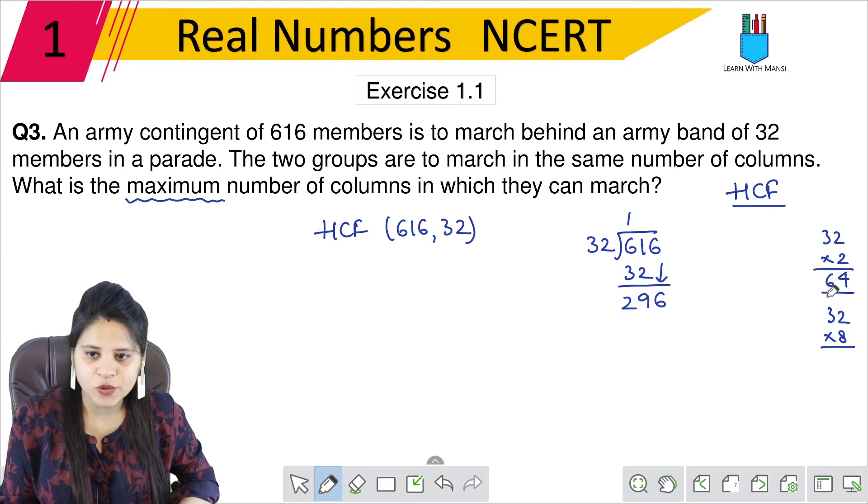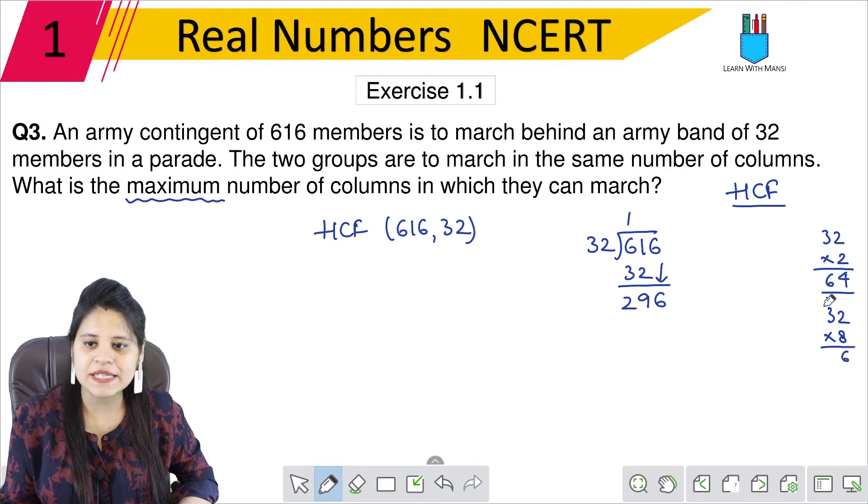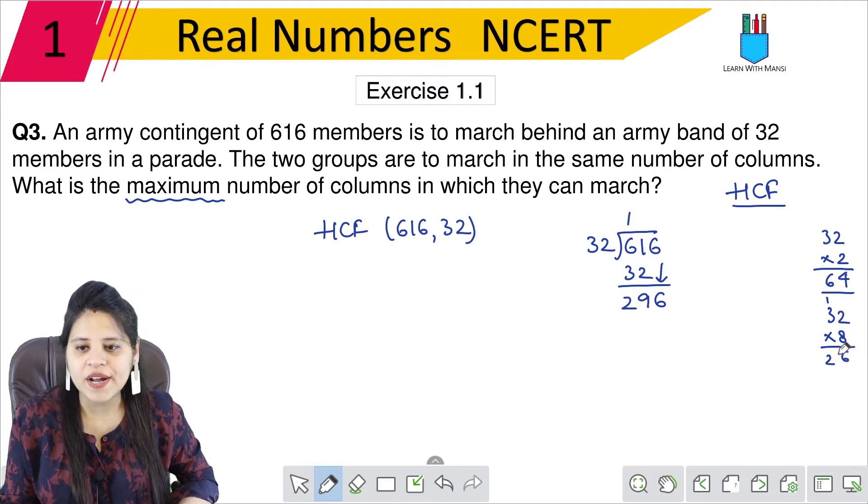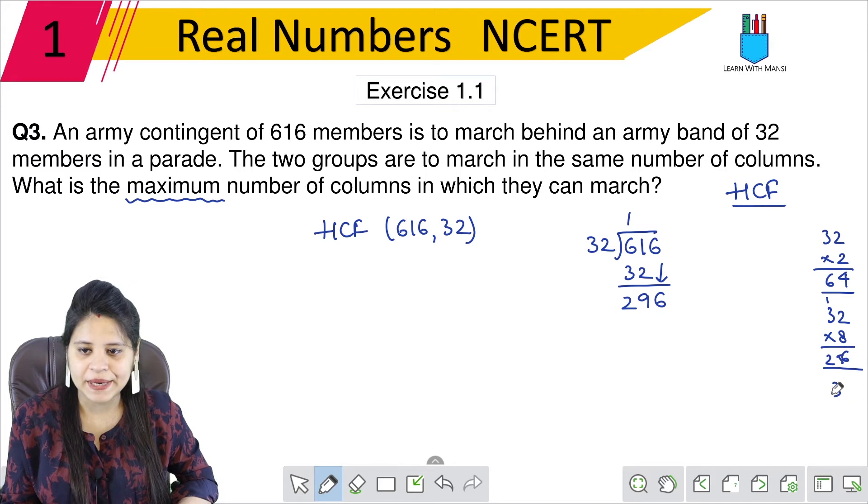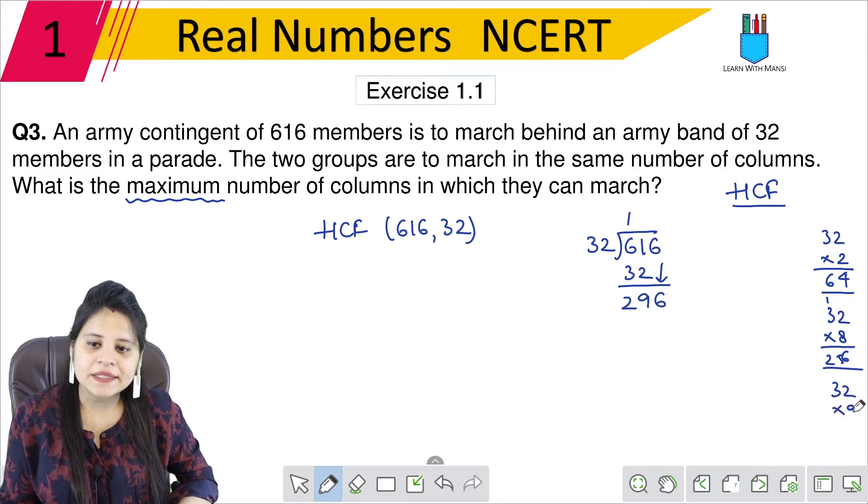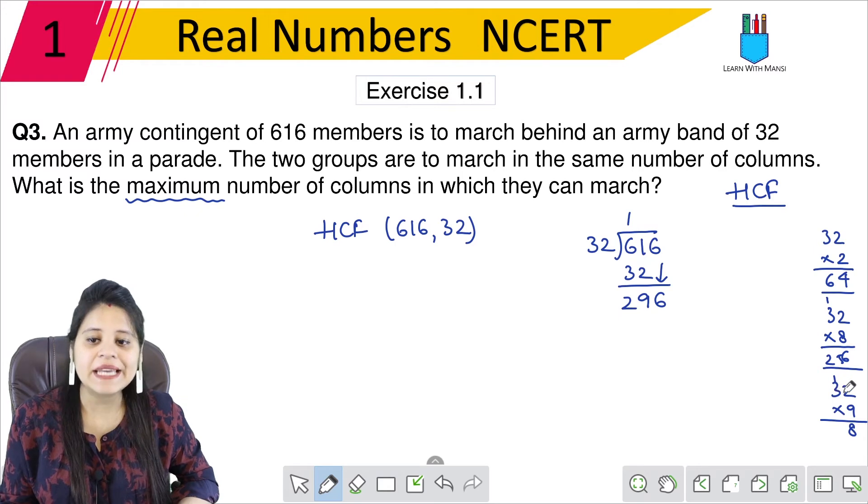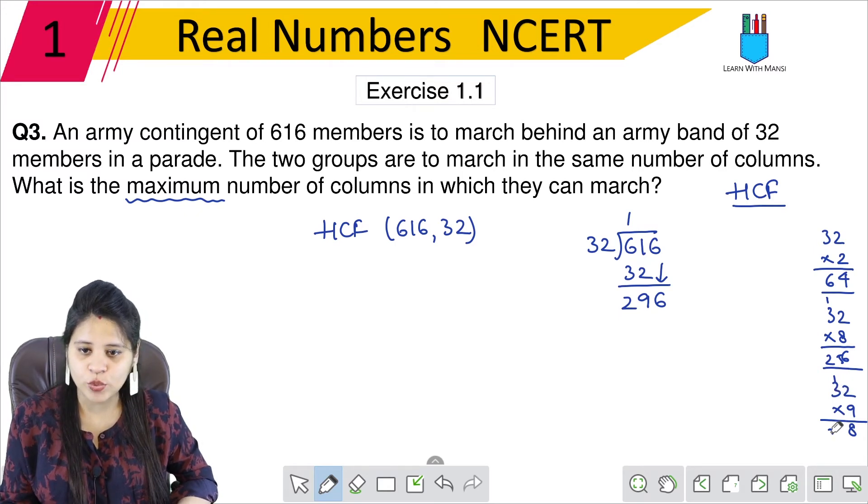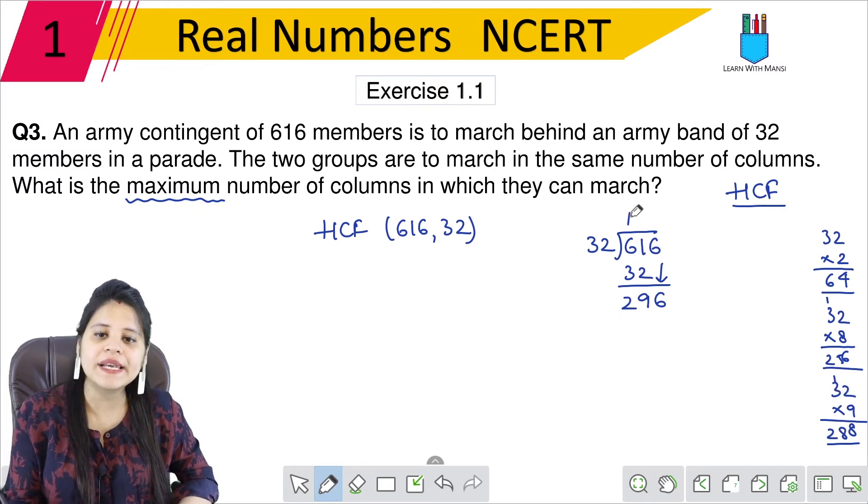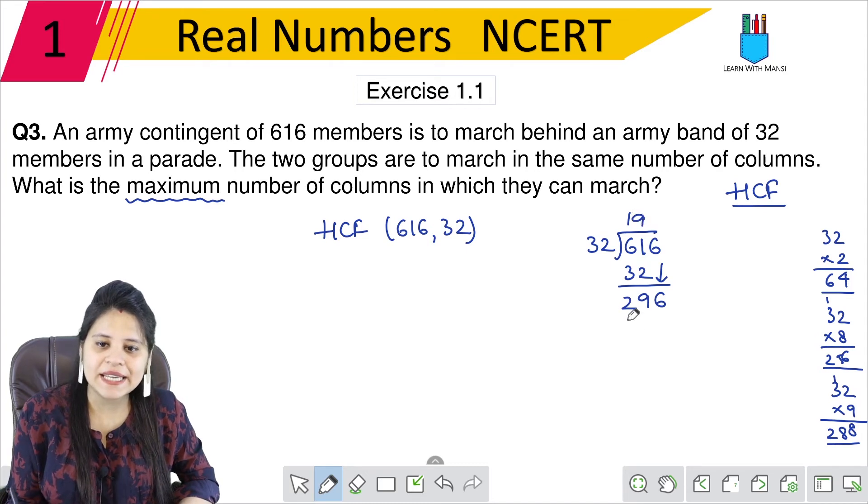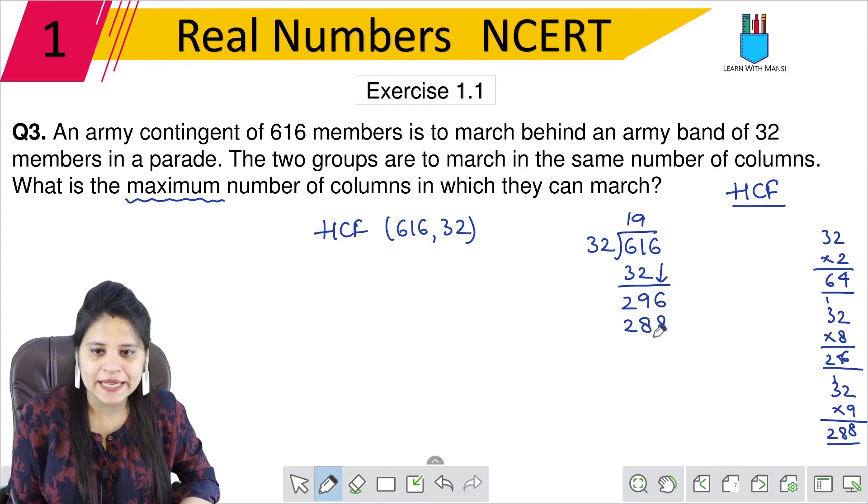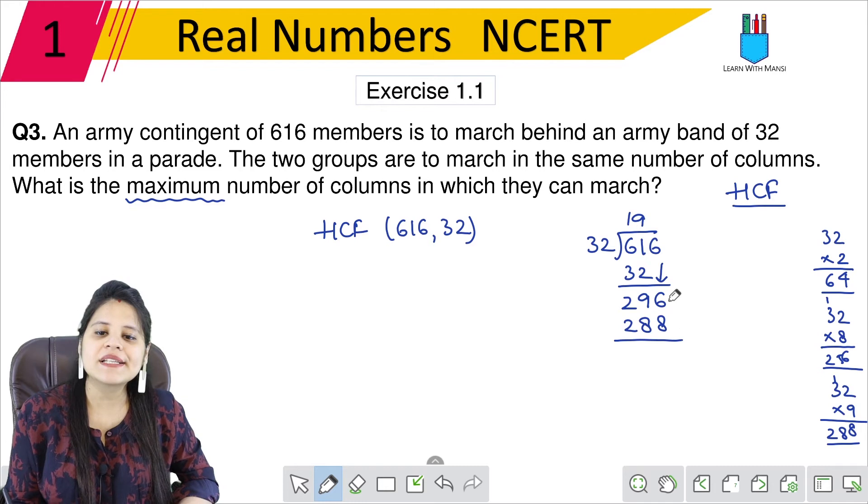32 by 8. 8 into 2 will come, that's 16. 8 into 3 will come, 24 plus 1 is 25. 256 is a big number. Let's see how it will come. 32 into 9. 9 into 2 is 18. Then 9 into 3 is 27, 28. So we can take this. We have 28.